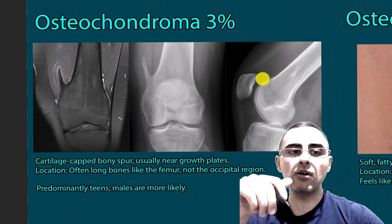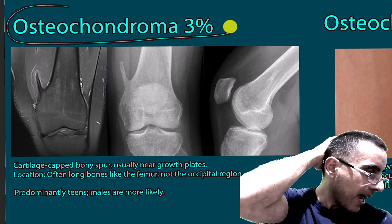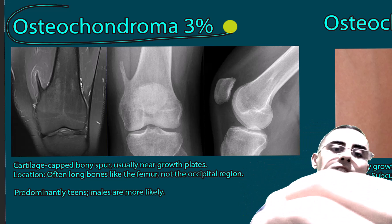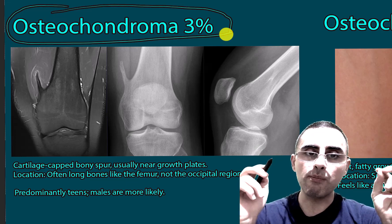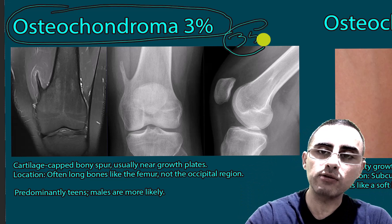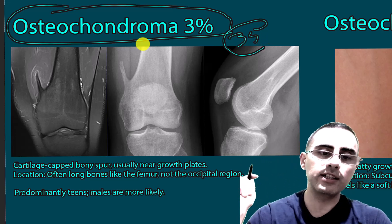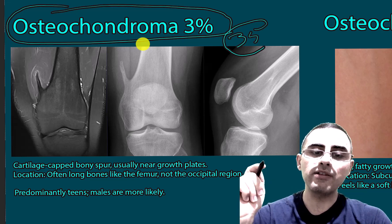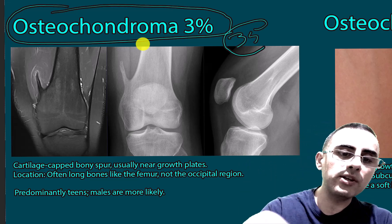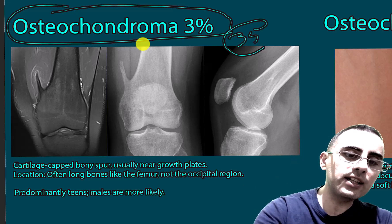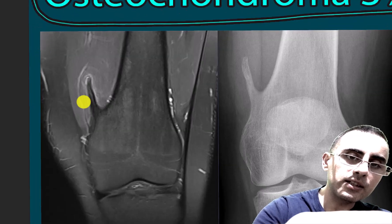Another possible cause is osteochondroma, though the back of the head is not a typical location. Osteochondroma is one of the most common benign bone tumors, accounting for 35 percent of benign bone tumors, but it is very rare on the back of the head. It is more common in long bones such as the femur, arms, and hips. Its characteristic feature is a cartilage-capped bony projection, as seen here.